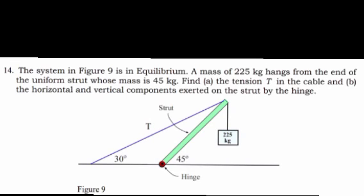The system in figure 9 is in equilibrium. A mass of 225 kg hangs from the end of a uniform strut whose mass is 445 kg. Find: (a) the tension in the cable, and (b) the horizontal and vertical components exerted on the strut by the hinge. We're going to do the same question here.